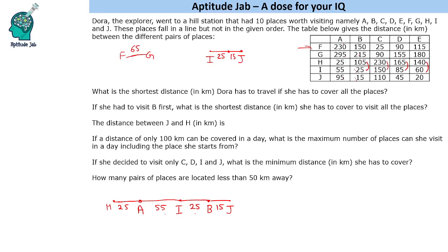Comparing A and B: we get 80, 80, 80 — H, A, and B are already placed. So I is between A and B, and this distance is 80. Now for B and C, we are getting 125, 125, 125, and 85. So B and C are 125 kilometers apart. The place falling between them is J, which is 15 kilometers from B. So C must be 110 kilometers from B, placing C here.